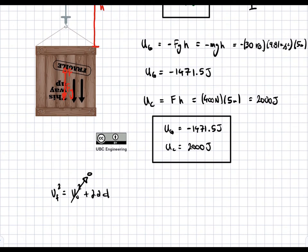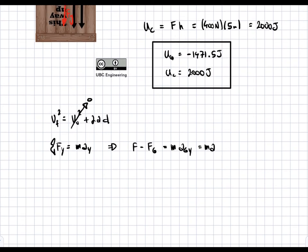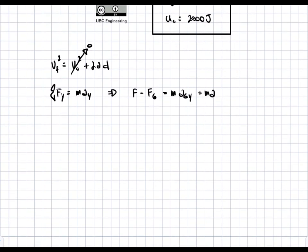So we're going to do a sum of force in the y direction. And we're going to equate it to M A. So if we do that, we get that F minus Fg is equal to M A. So we have F and we have Fg because Fg is simply M G.